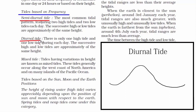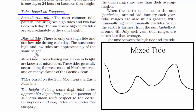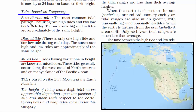The second type is diurnal tide — in this form there is only one high and one low tide each day, and they are of the same height. So in semi-diurnal tides there are two high and two low tides per day, whereas in diurnal tides there is only one high and one low tide every day. The third is mixed tide — by the name 'mixed' you can figure out there is variation in height. These tides generally have characteristics of both diurnal and semi-diurnal tides, and are found along the west coast of North America and many islands of the Pacific Ocean.